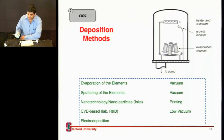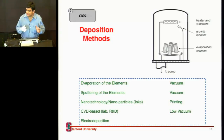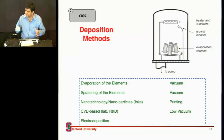All these startups I mentioned — Nanosolar, Stion, AKT, and plenty of others — their unique IP and how they differentiate from each other is essentially a process differentiation. They each have one unique thing: how to deposit the absorber layer. Each of them has its own different recipe or specific method of depositing this CIGS material.